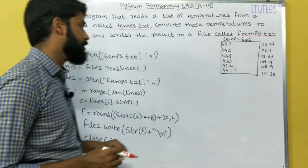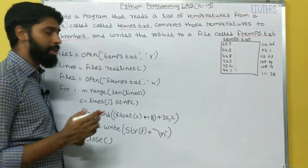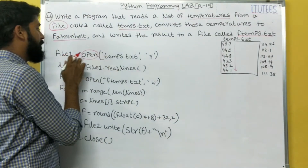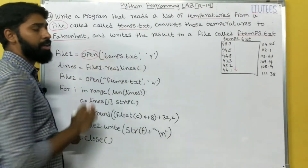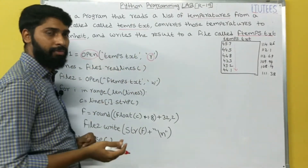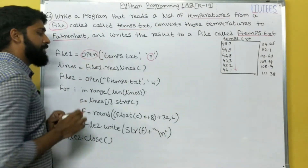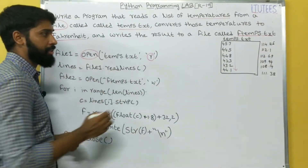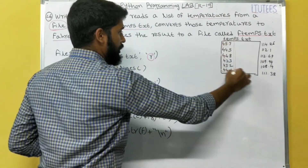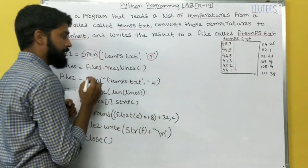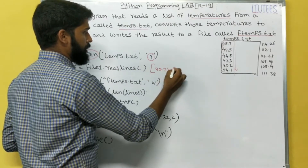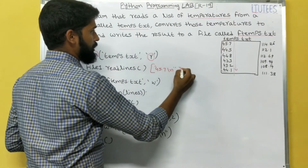Now we can see how we can solve this problem. We open a file using the open method: file1 = open('temps.txt'). That means we are reading the data from that file. So lines = file1.readlines(). That means all these lines are stored in a list called lines.